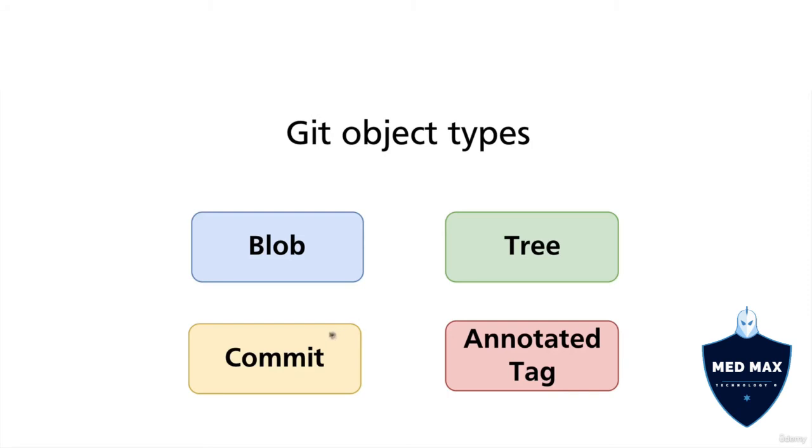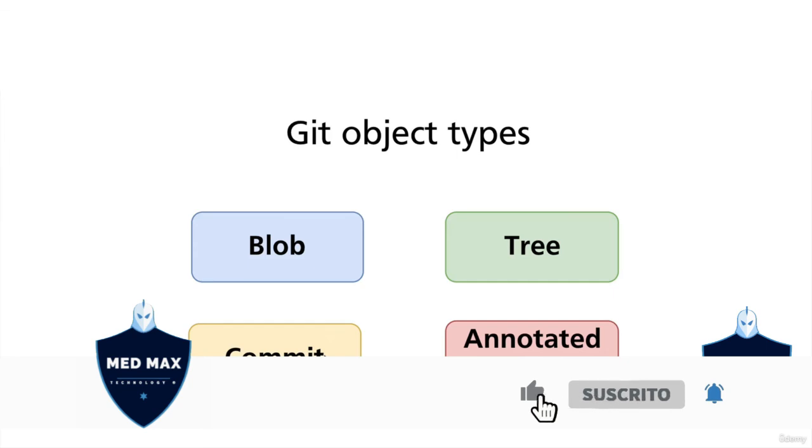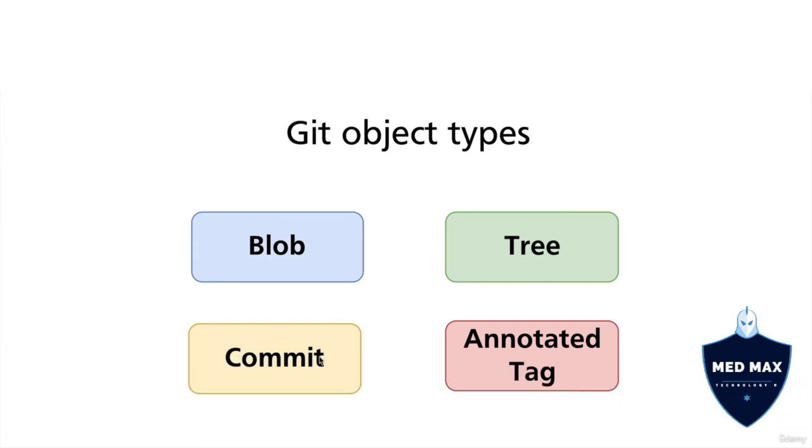And you could create different commits, and therefore you could create different pointers to different trees. And with help of commits you could actually create different snapshots of your project at different moments of time.